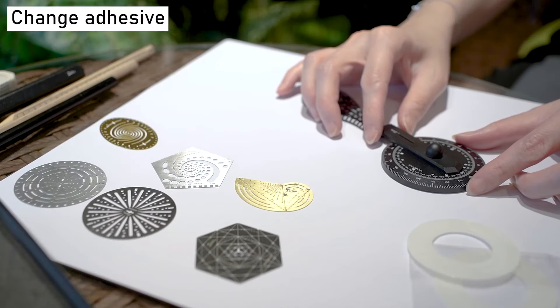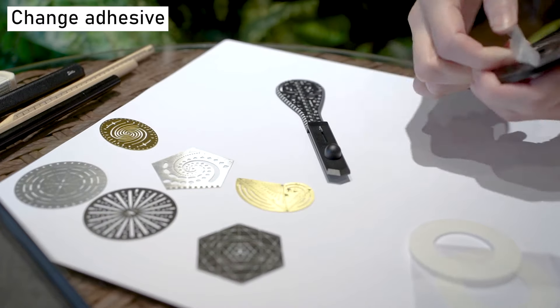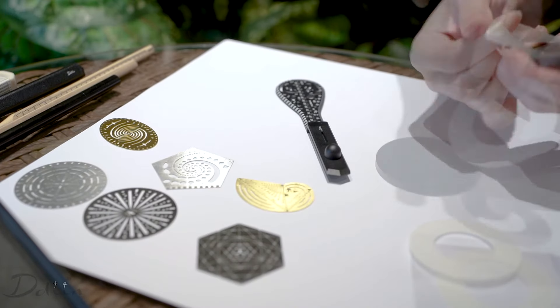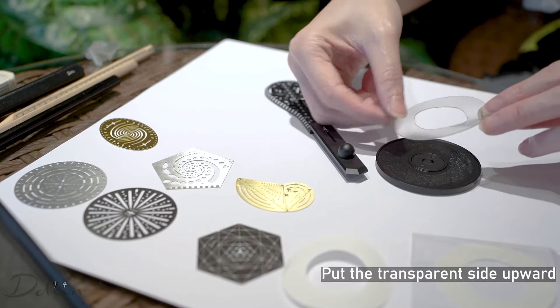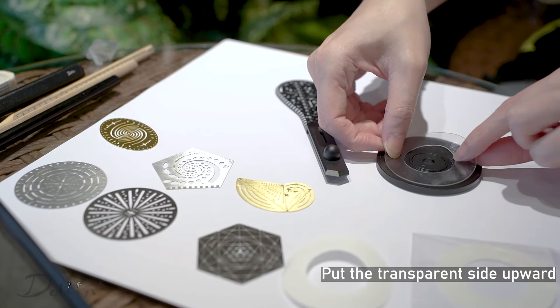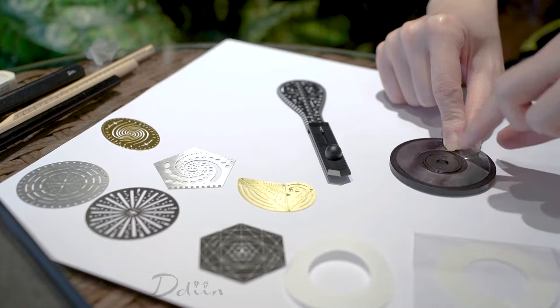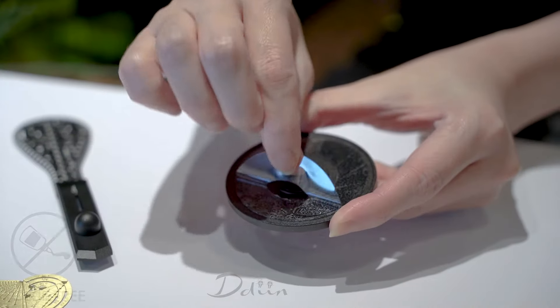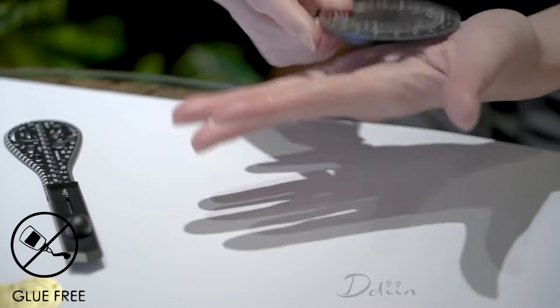If you need to change the adhesive, simply remove the current one and grab one of the extra adhesives. Peel off the white film and stick it to the base. Then, peel off the clear film and repeatedly press it against your palm to reduce its stickiness.